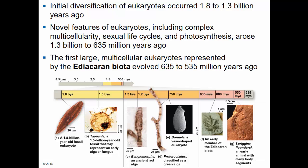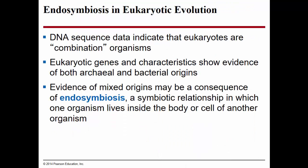DNA evidence indicates that eukaryotes are what we call combination organisms. This means that several different organisms came together and lived in close association, eventually forming a single organism out of several that lived together. Genes in eukaryotes and the characteristics of several of their types of organelles show evidence that eukaryotes originated from both members of the domain Archaea and members of the domain Bacteria.